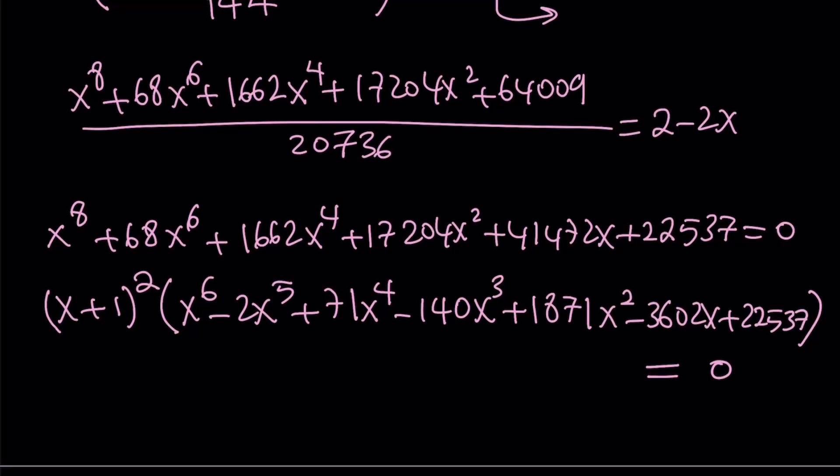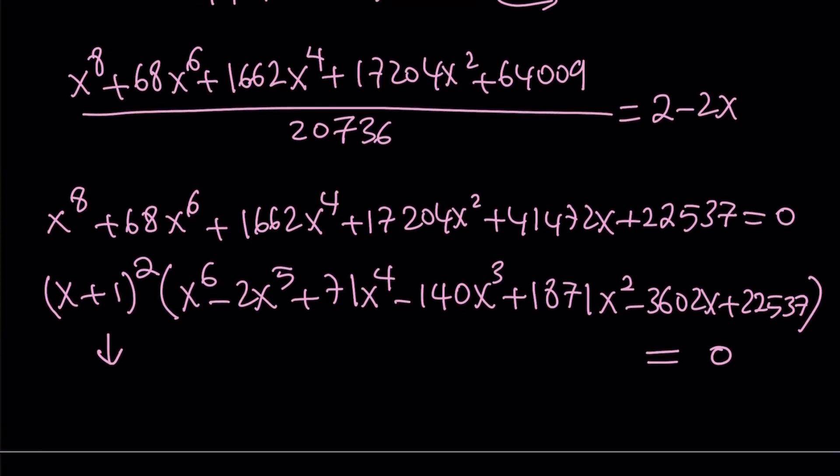Awesome. Well, this basically shows us that x equals negative 1 from here. And since we're looking for real solutions, I don't think we're going to get any other real solutions from the 6th degree equation. But anyways, from here we can say that x equals negative 1. And now by way of substitution, we can find the other variables.